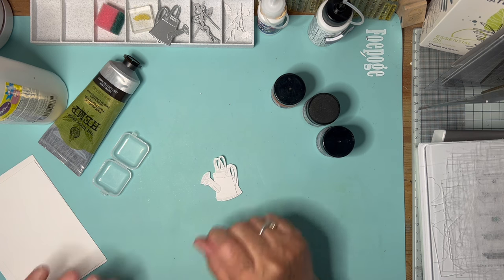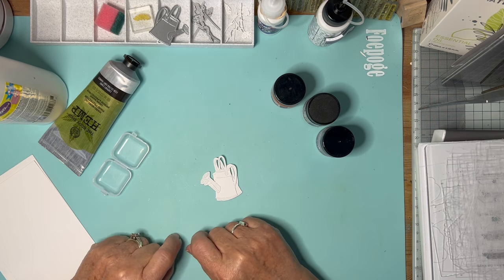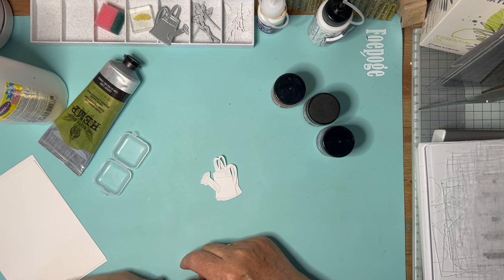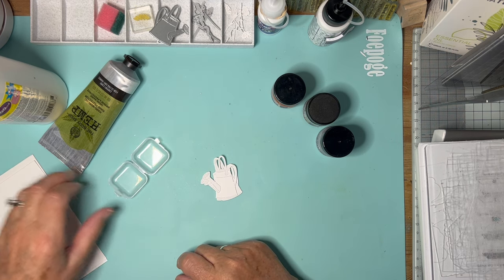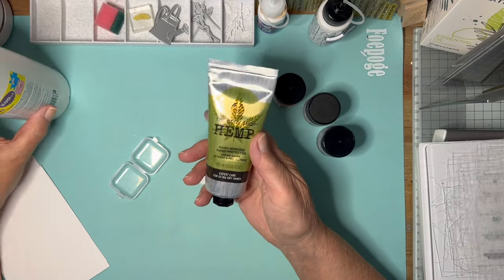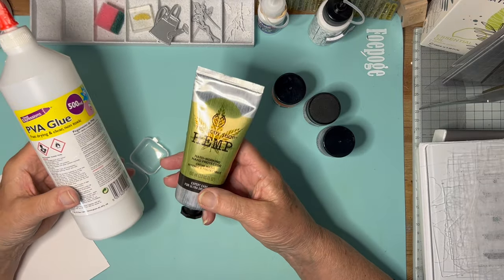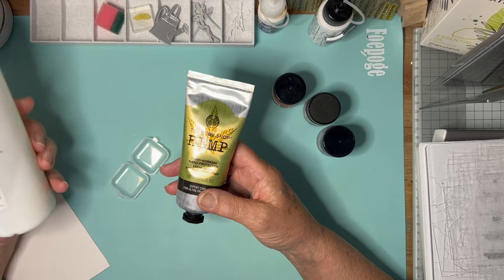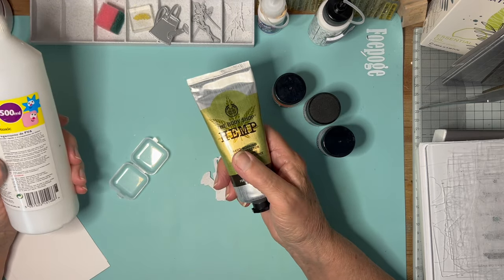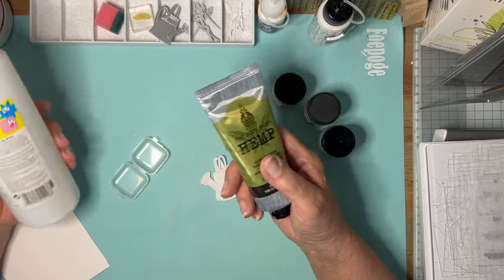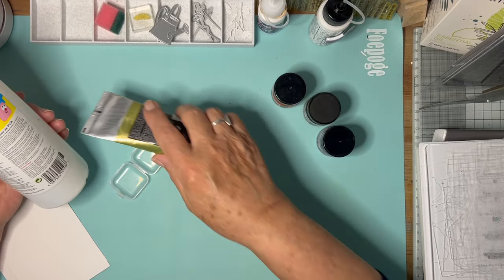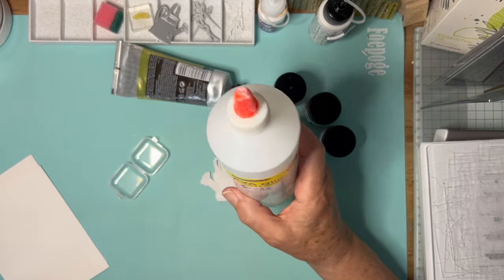The suggestion was that you could use household items to try and achieve the same goal. And what it was was hand cream and white glue, school glue, PVA glue. I've never done this before. I don't know if it's going to work. But if you don't try, you don't know, do you? So I thought we would do just that.